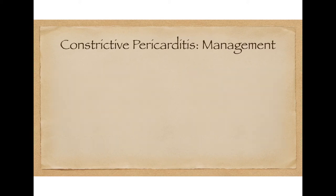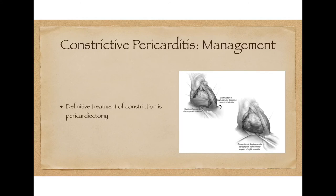While diagnosing constrictive pericarditis may present many diagnostic challenges, the management is relatively straightforward. The definitive treatment is a pericardiectomy, which involves open heart surgery where the surgeon carefully dissects away the diseased pericardium and separates it from the myocardium. This takes away the diastolic filling barrier and allows the heart to resume normal hemodynamics.